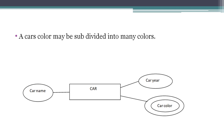For example, the car model Swift Desire released in 2020 may come in different colors — silky silver or sea gray. That means one attribute can have multiple values. That attribute is a multi-valued attribute. For example, car color is a multi-valued attribute for the entity car.